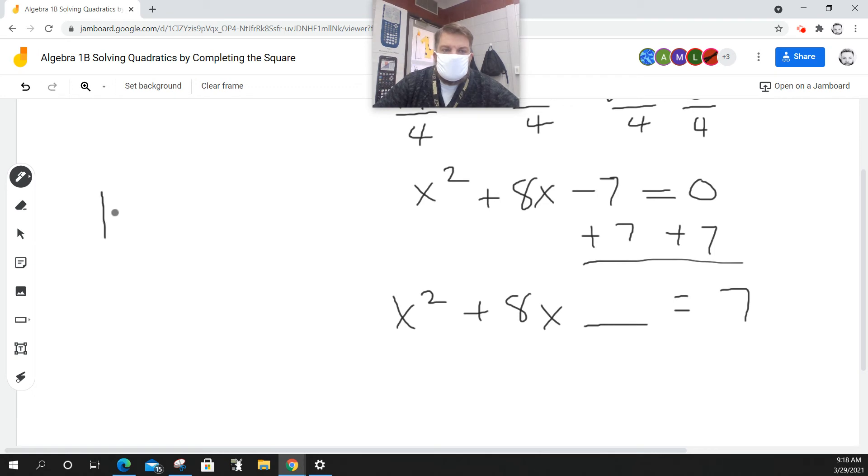Now, what happens here is b is positive 8. And so I'm going to need two terms. The first one is b over 2, which is 8 over 2, which is 4.